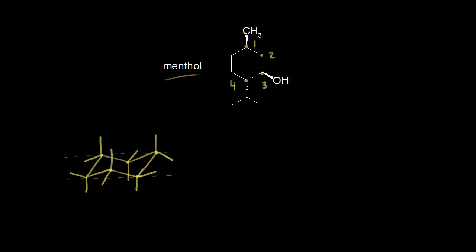Let's look at our groups on the ring. We have a methyl group at carbon one. Since this is a wedge, that means it's going up in space, so we're going to put the methyl group going up relative to the plane of the ring. That means the methyl group is axial, because axial is the only one that's going up at carbon one. Next we look at the OH — the OH is going up at carbon three. So we need to put the OH going up at carbon three, and the only way we can do that is by putting the OH on axial. So we're going to put the OH here on carbon three, going up in space.